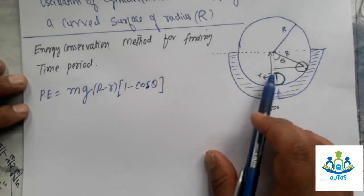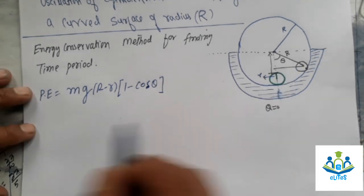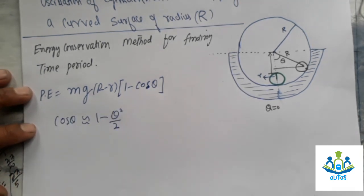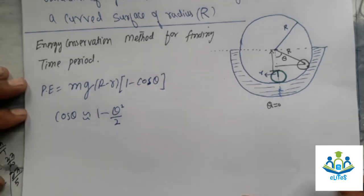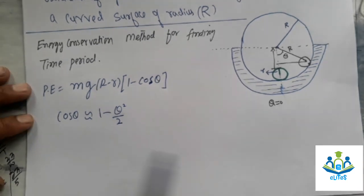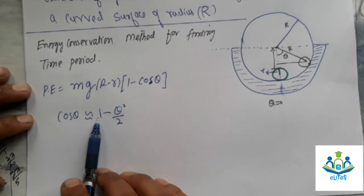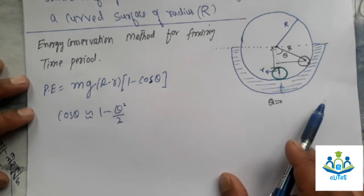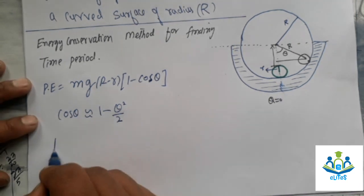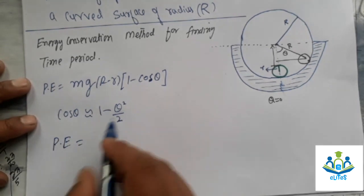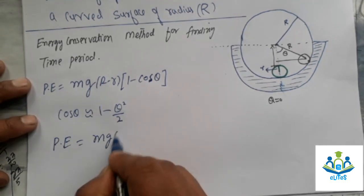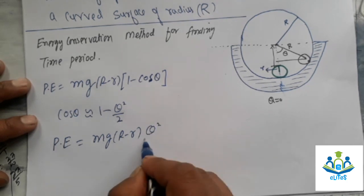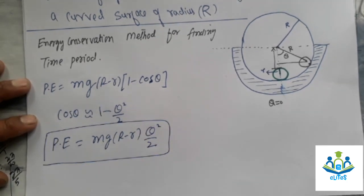For small oscillations, we use the approximation cos(theta) approximately equals 1 minus theta-squared over 2. We cannot take cos(theta) equal to 1 because then the potential energy at theta_max would be zero, which is not possible. So the potential energy becomes Mg(R minus r) times theta-squared over 2.